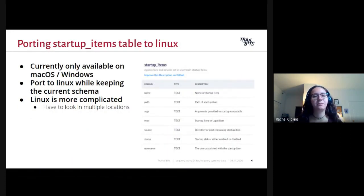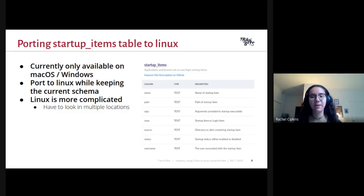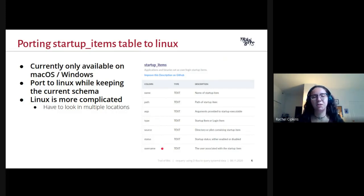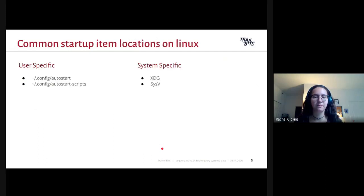My initial task was to port the startup items table to Linux. Startup items are simply just applications and binaries that are started up when the system is booted. It's currently only available on Mac and Windows, and the goal was to port it to Linux while keeping the current schema, which you can see on the right: we have name, path, arguments, type, source, status, and username. However, porting to Linux is much more complicated than Mac and Windows because there are multiple locations we have to look for. There are two different types of startup items on Linux: user-specific and system-specific.